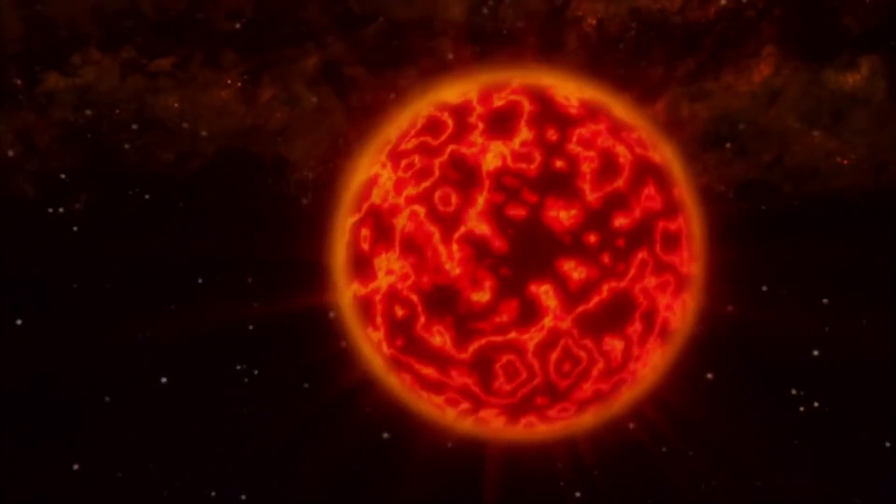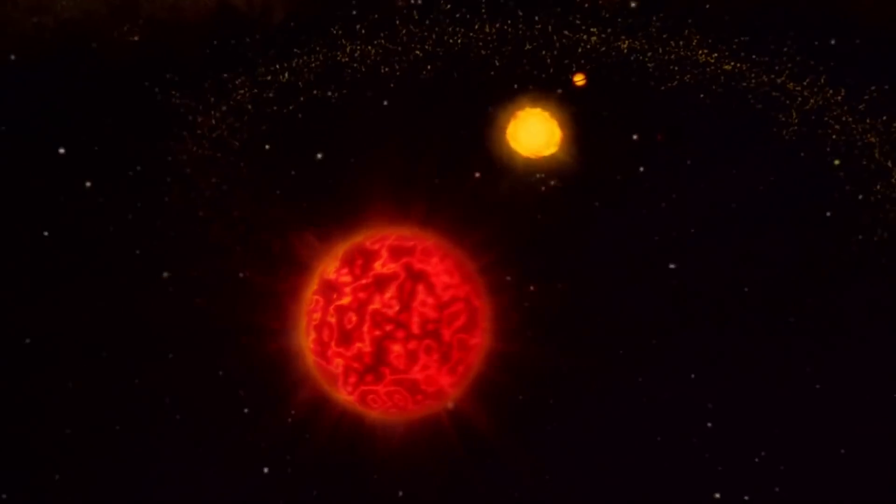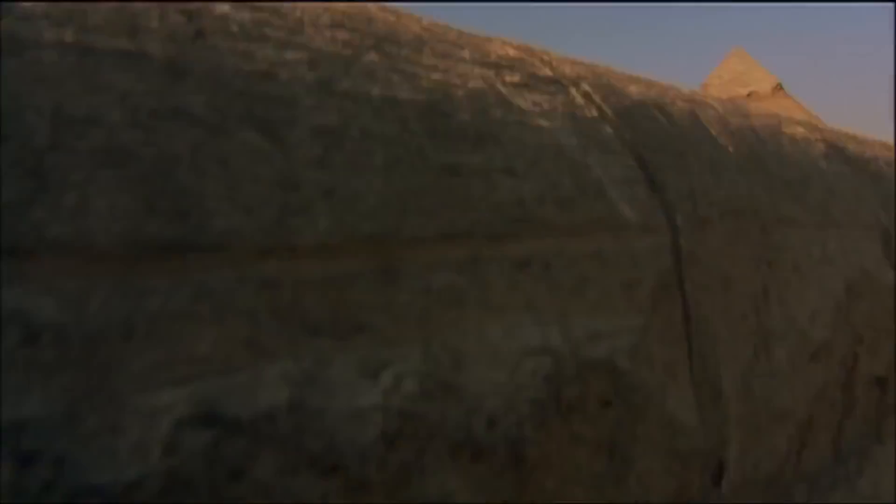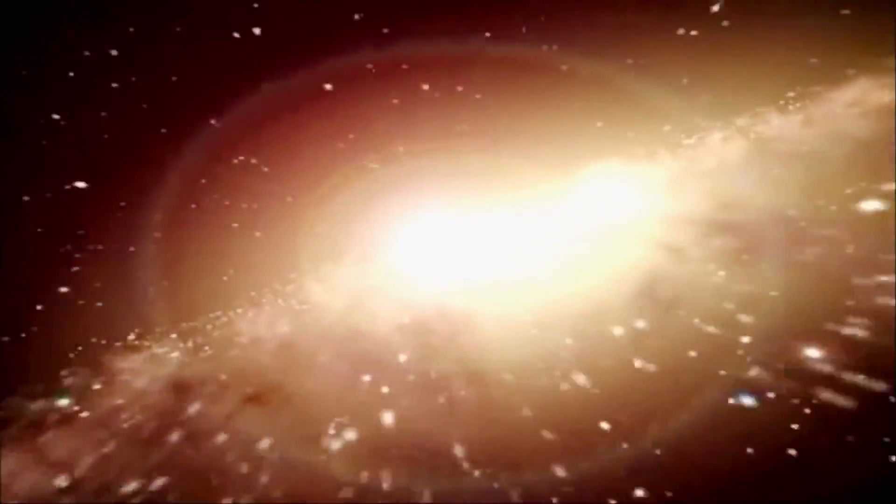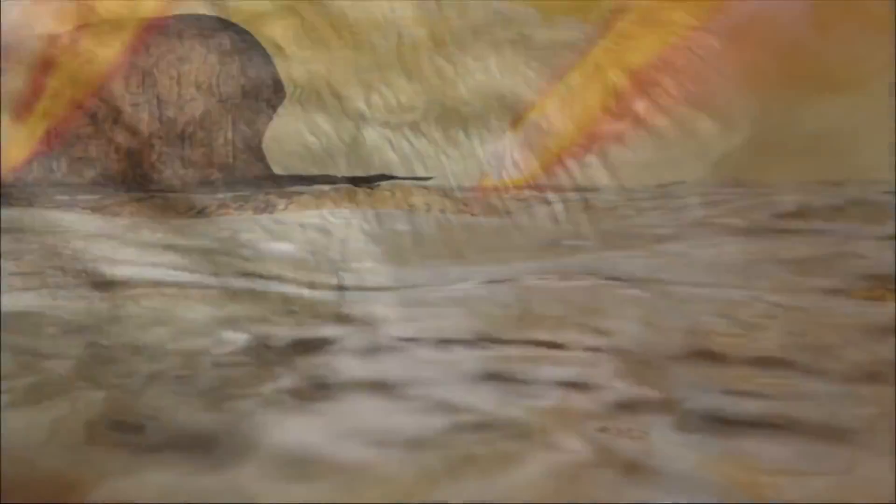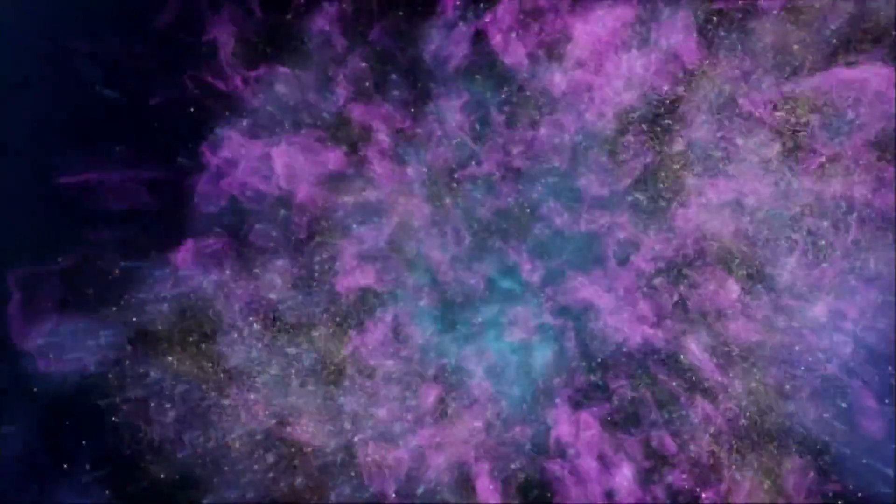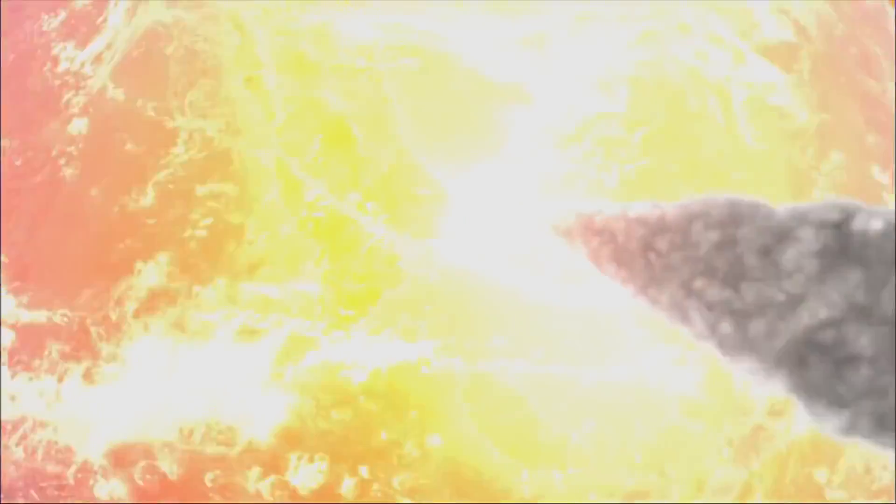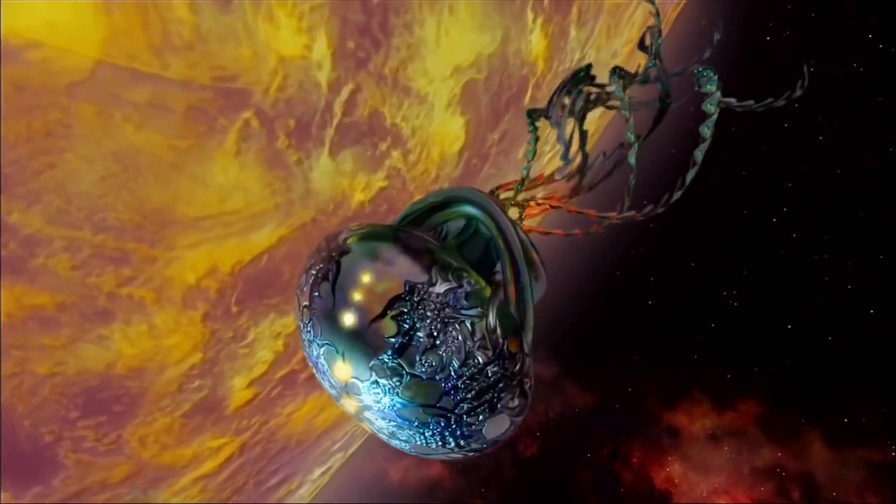Does our sun have a deadly nemesis that dooms life on our planet? Is it possible to travel through time? It is one of the greatest questions. What happened to Matter's evil twin? The mind hunts for an explanation. How did the water on Mars disappear? And what came before the Big Bang? This is the greatest mystery in all of science. Big questions and cutting-edge science. The Universe: Unexplained Mysteries.